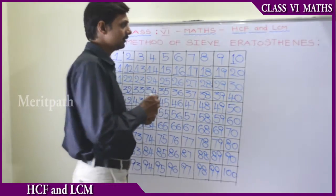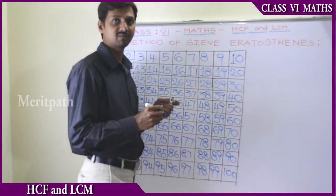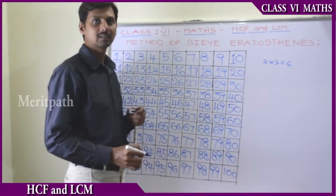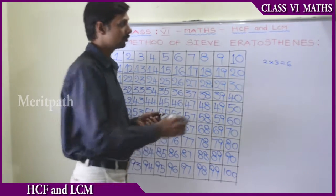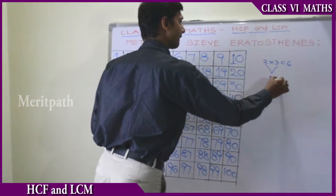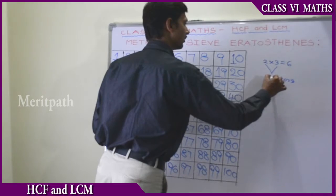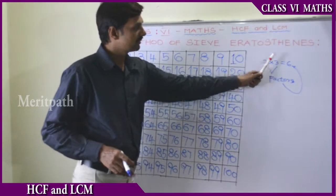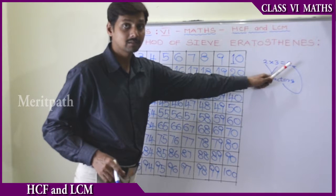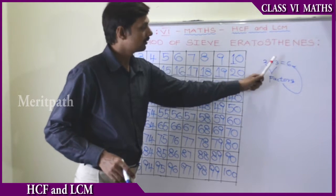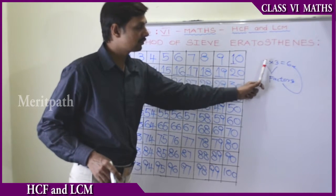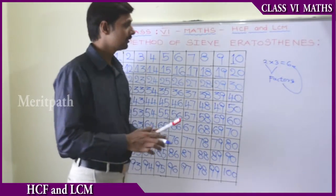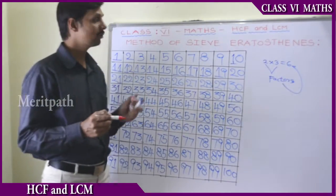So here we know the concept of factors. For example, 2 into 3 is equal to 6, and 6 is divisible by 2 and also by 3. So we call 2 and 3 are factors of 6. If 2 into 3 is equal to 6, then 6 is divisible by 2 and 6 is also divisible by 3. So 2 and 3 are the factors of 6.